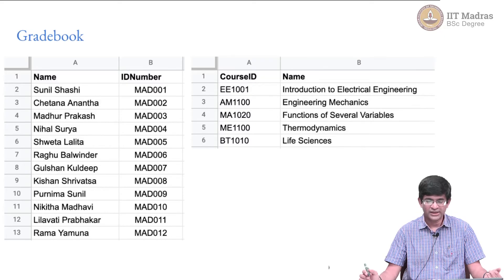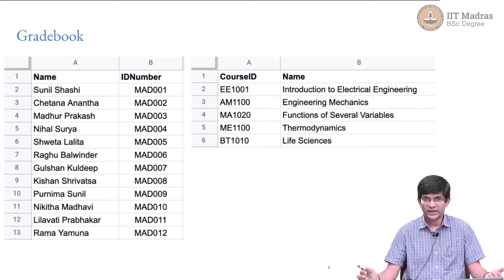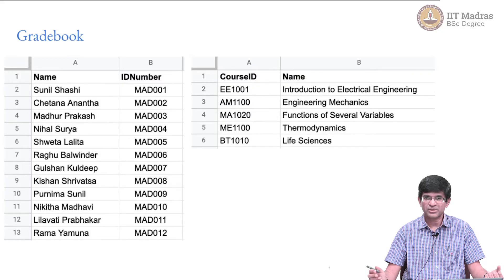The ID number or roll number in the case of students has to be unique. On the other hand, names need not be unique — it is entirely possible that more than one person has the same name, but we expect they have different ID numbers. Similarly, on the right-hand side you can see a list of courses. The course ID is something like EE1001 or AM1100, with corresponding names like Introduction to Electrical Engineering or Engineering Mechanics. The course ID and student ID follow clearly defined patterns — for students, it is three letters like MAD followed by three digits. This is common in roll numbers in any college, as it makes it easy to validate whether the ID entered is a valid roll number. Similarly, courses also tend to have systematic identification patterns.